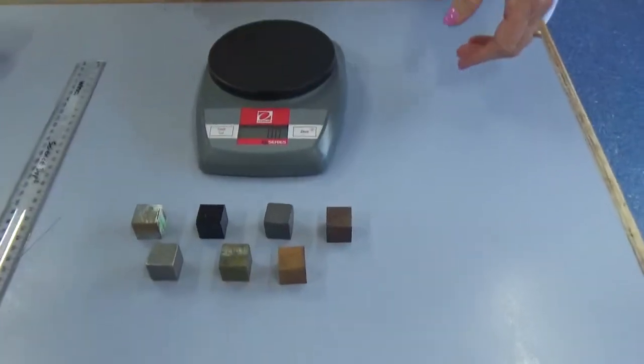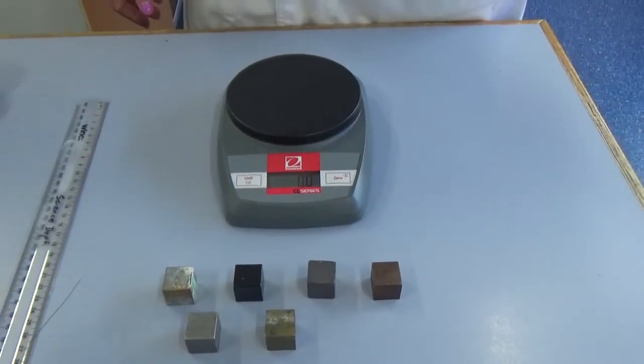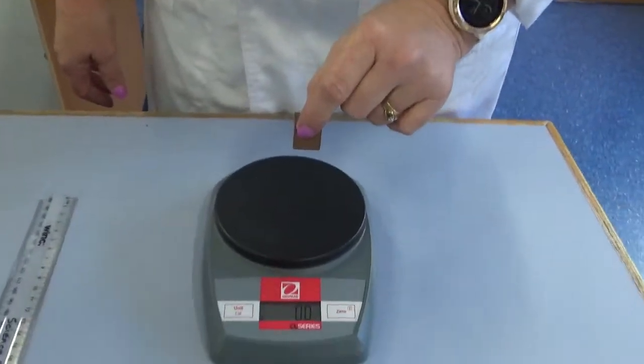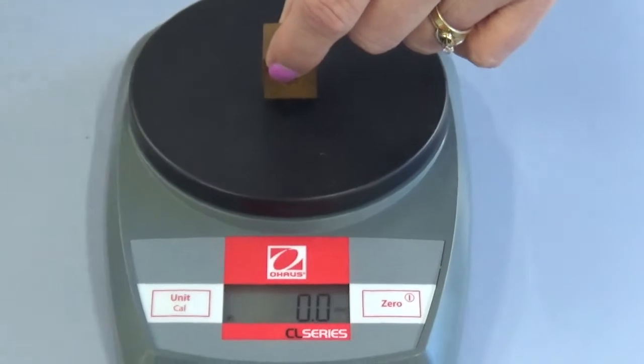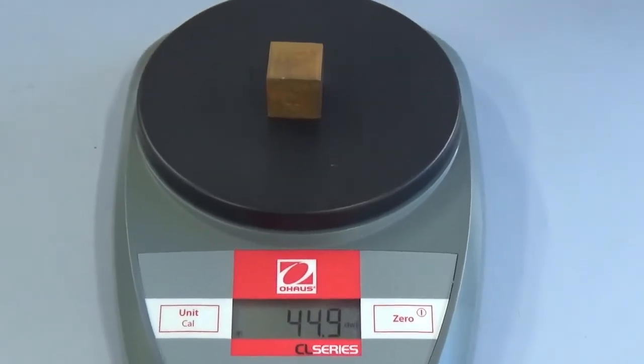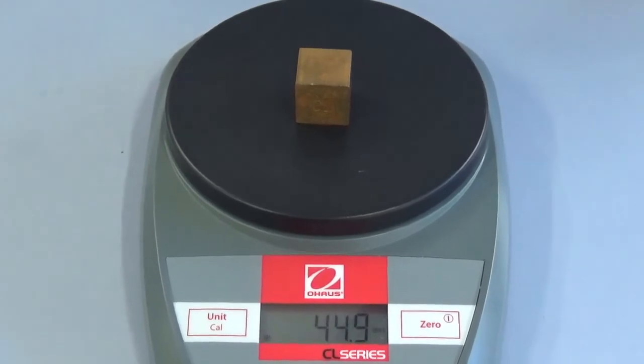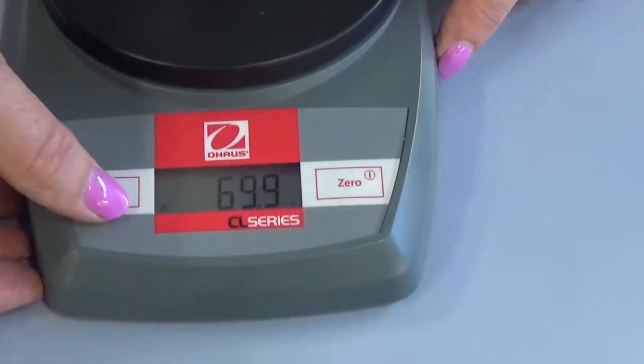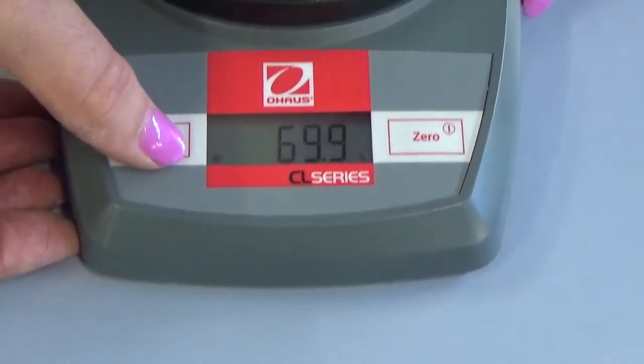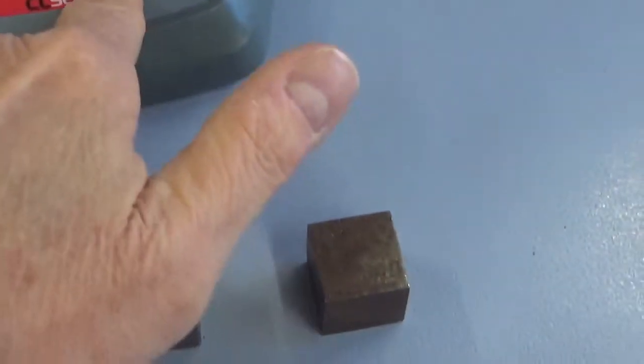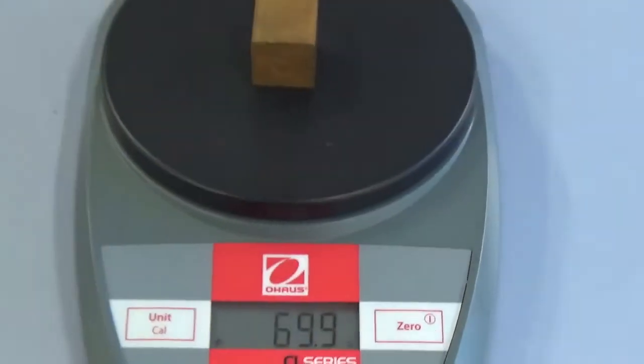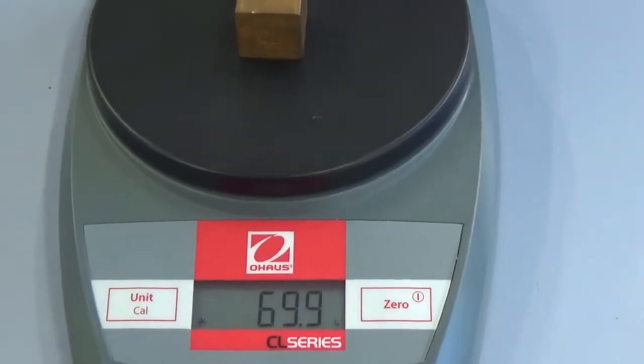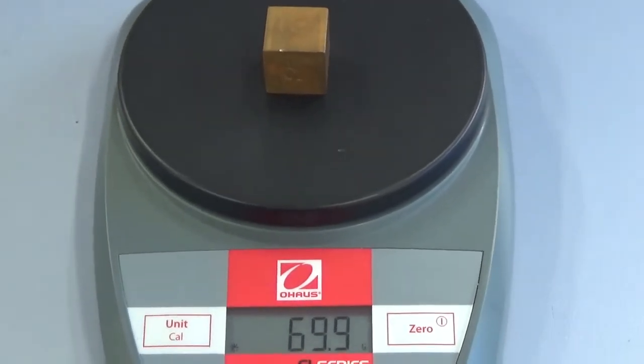Alright, what we're going to do now is weigh all of these density cubes. So this first one that I measured is a cube of copper. So let's have a look at the, put it on the balance and see what the cube of copper weighs. 44.9 grams, I think that's on grams isn't it, maybe not, let's check. Now we're on grams, sorry 69.9 grams, write that down on your sheet.